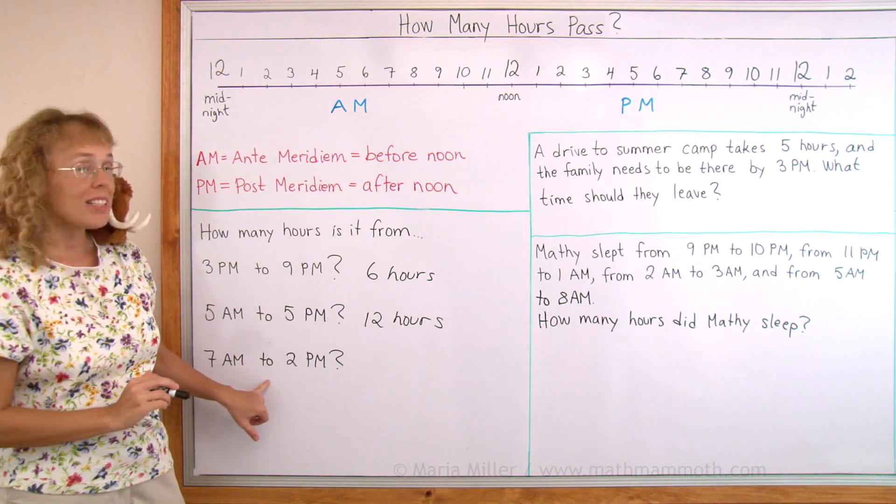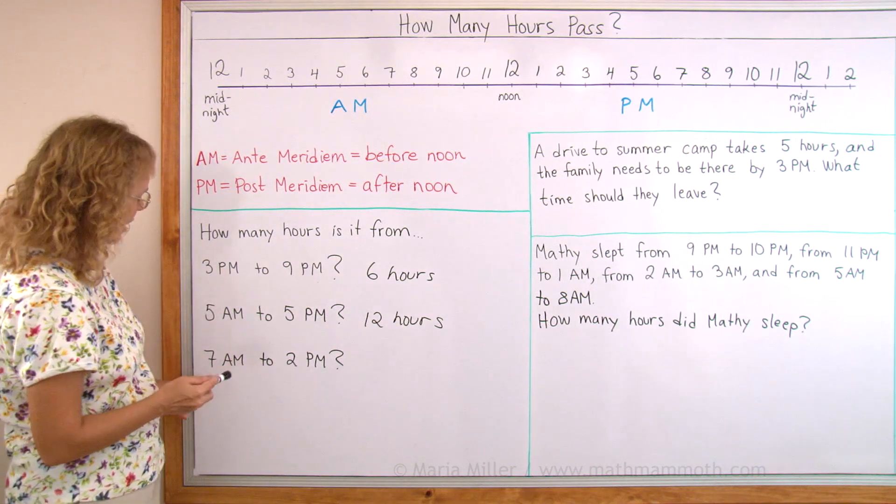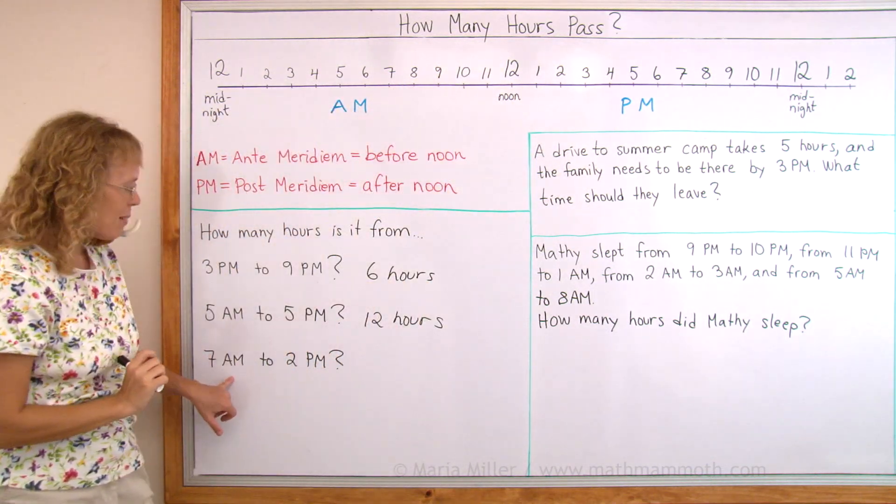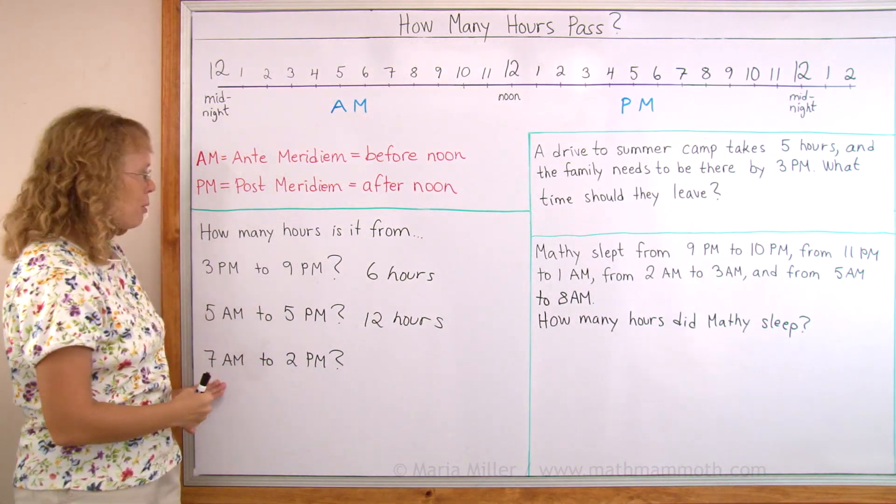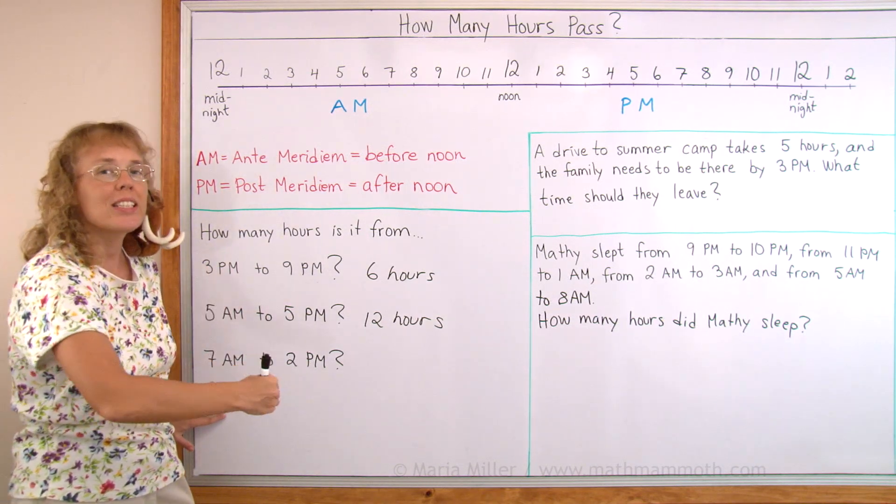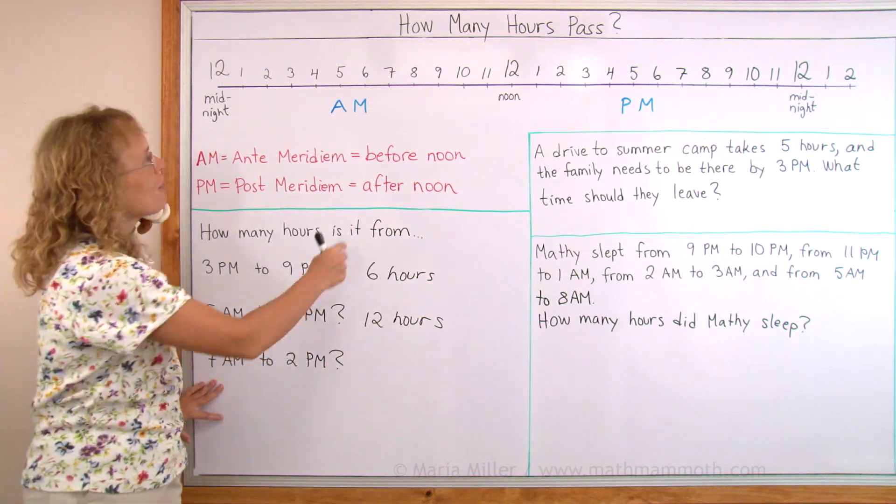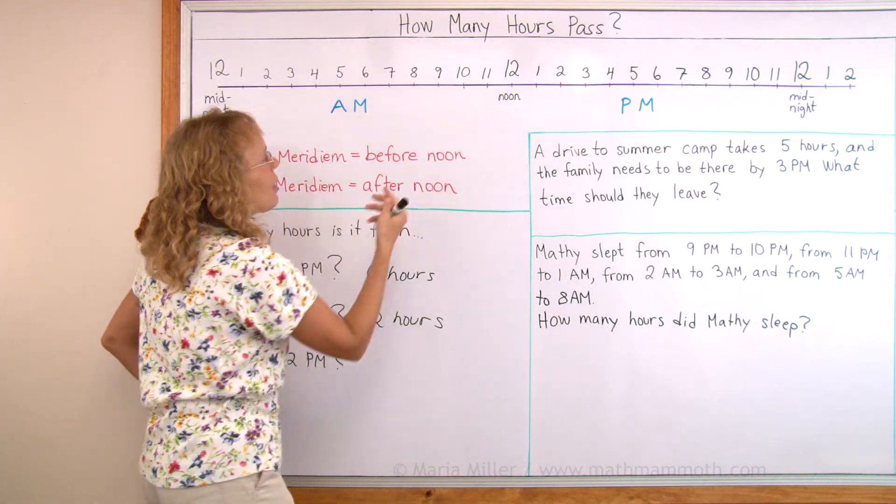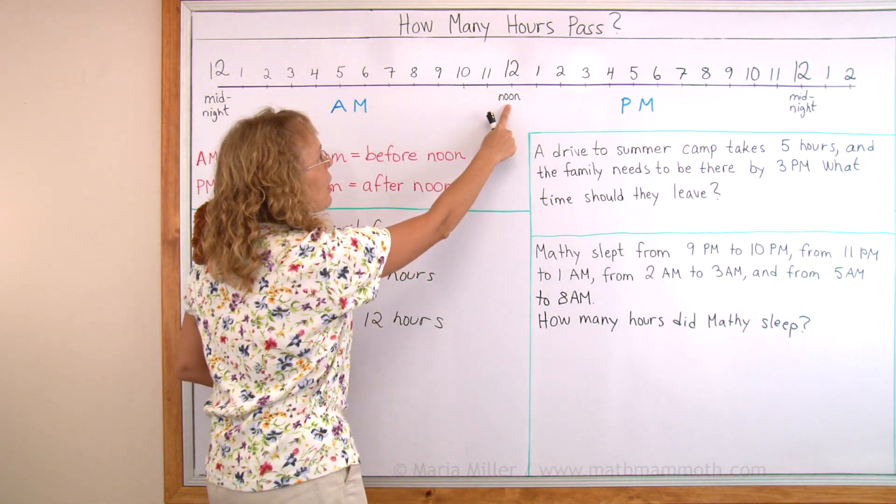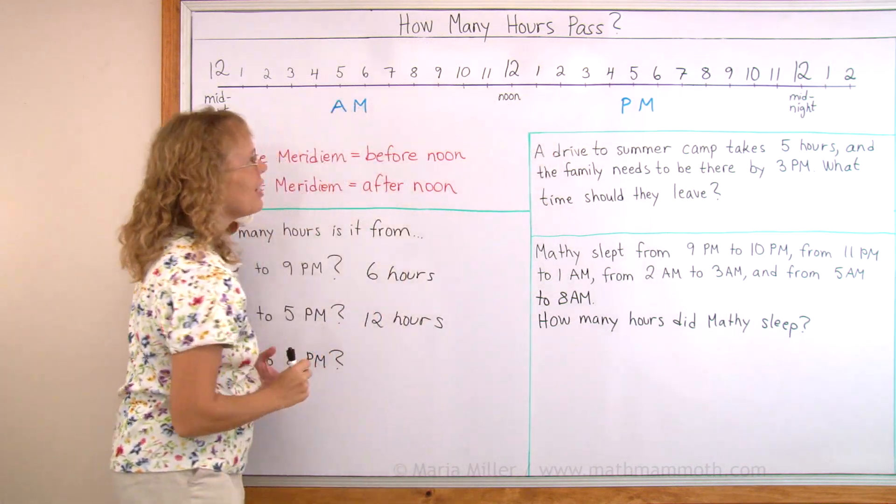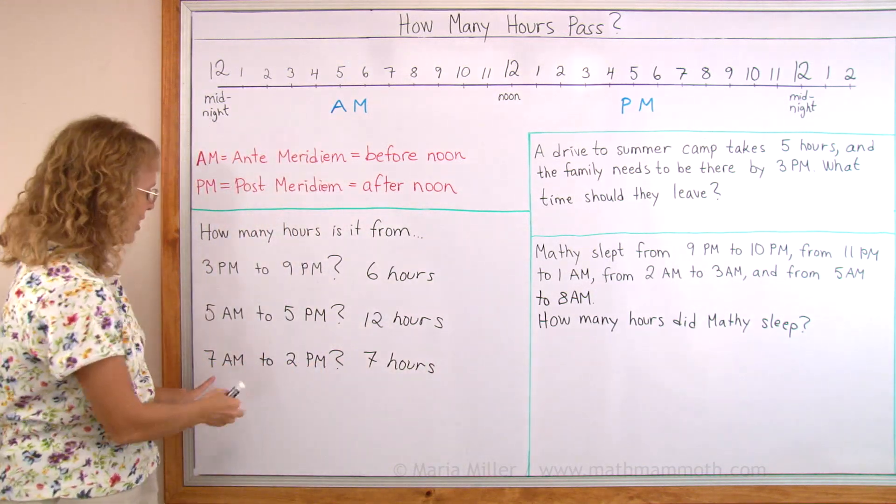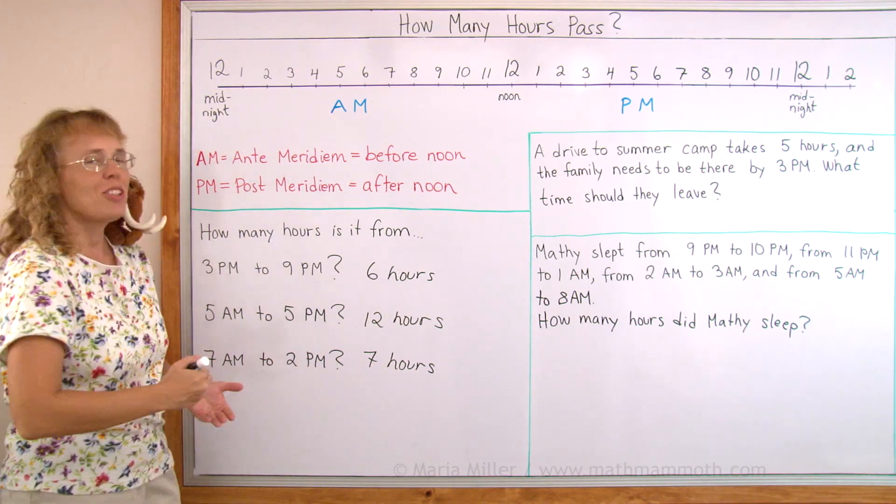How about from 7 AM till 2 PM? 7 AM over here, 2 PM over here. Notice that this is AM, this is PM. It changes. So what we want to do in this case is calculate from 7 AM till noon and then from noon till 2 PM. We want to calculate this in two parts. From 7 till noon, which is 12. 7 plus 5 would make 12, so that is 5 hours. And then from 12 till 2 PM is of course 2 hours more. 5 plus 2, 7 hours. Notice that it does not work to subtract 7 minus 2 here. You need to figure it out in two parts.